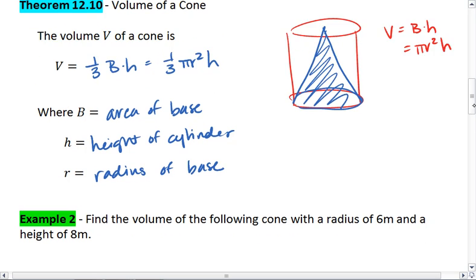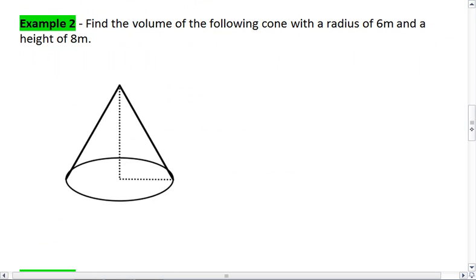Let's try an example here. We want to find the volume of the following cone with a radius of 6 meters and a height of 8 meters. This tells me that r is 6, h is 8.